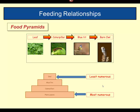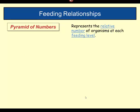We can think about this in terms of what's called a food pyramid. A food pyramid shows the numbers — here's our same food chain. At the bottom we'll have thousands of plant leaves, then hundreds of caterpillars, a few tens of blue tits, and one or two owls. The least numerous are always at the top of the food pyramid and the most numerous are at the bottom. The pyramid of numbers represents the relative number of organisms at each feeding level.